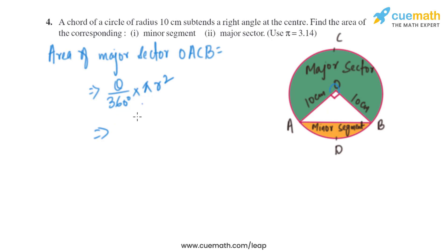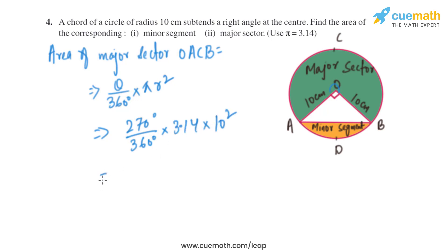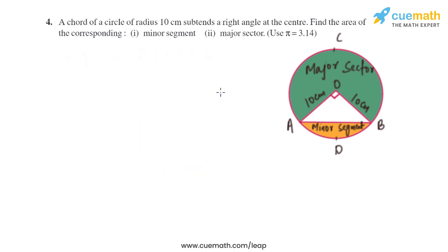The angle theta for the major sector is 270 degrees. So it is 270 divided by 360, multiplied by pi (3.14) and radius squared (10 squared). On solving this, we get the area of the major sector OACB equal to 235.5 square centimeters.